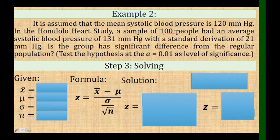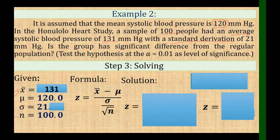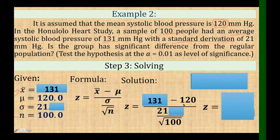From the 100 people, find the sample mean. The sample mean is the average, which is 131. The standard deviation sigma is 21. The remaining value is the population mean mu, which is 120. So our given values are: sample mean = 131, mu = 120, sigma = 21, and n = 100.